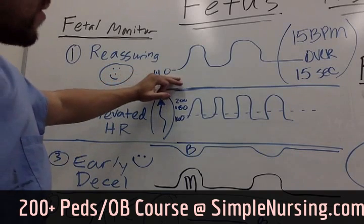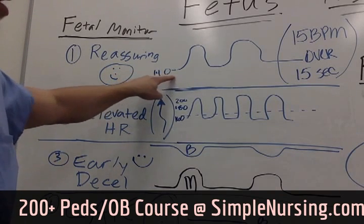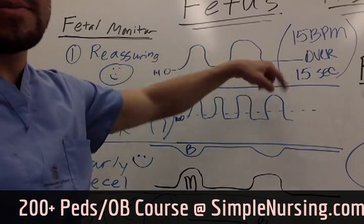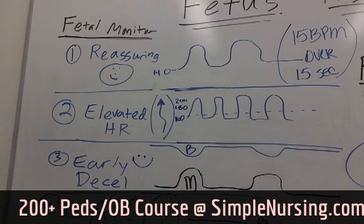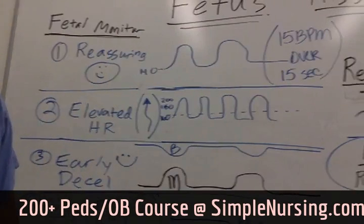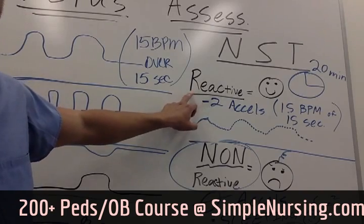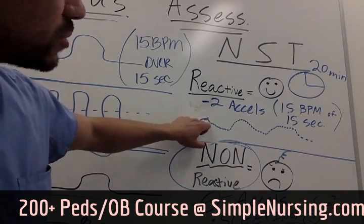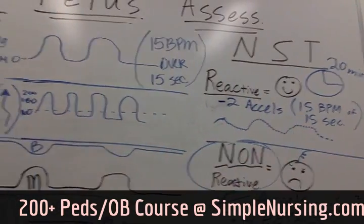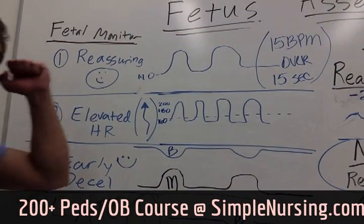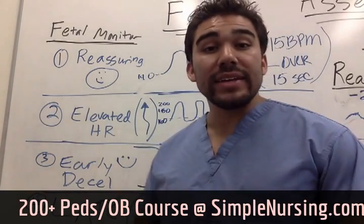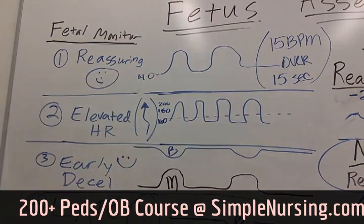All that means is that, say we have a baseline of 140, we're going up and then we drop back down slowly — up for 15 beats over 15 seconds. Same thing as our stress test — you remember your reactive stress test. Two accelerations is just fancy words for your baby moving, so the heart rate's going up. If you and I move, we're running, our heart rate is going to go up. If your baby is moving, their heart rate should go up too.